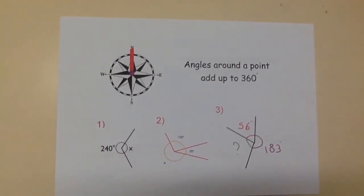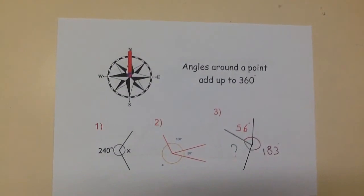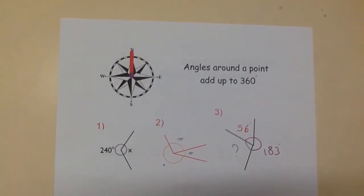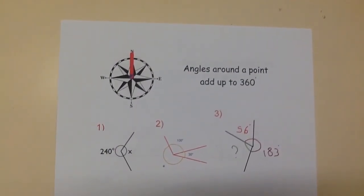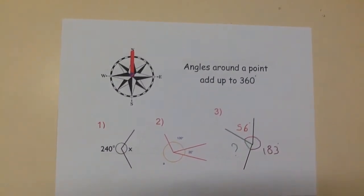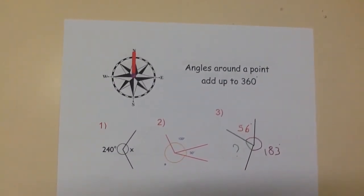For question 3, we add together 183 and 56 to give us 239 degrees. We then subtract this from 360 degrees, which tells us the final angle is 121 degrees.